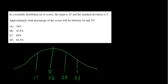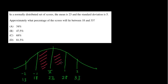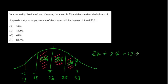Five under the mean would be 18, and then that will be 13. Approximately what percentage of the scores will lie between 18 and 33? So I want this section, this one, and this one. We know this is 34%, this is 34%, and this is 13.5%. So 34 plus 34 plus 13.5 equals 68 plus 13.5, which is 81.5% — which is D.